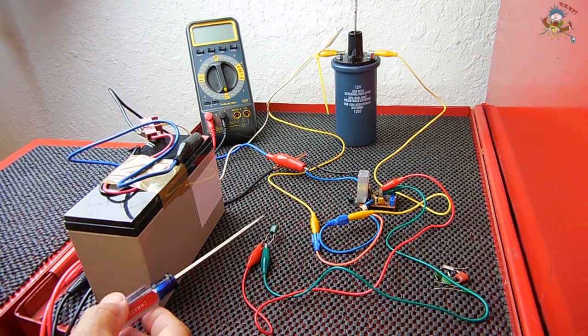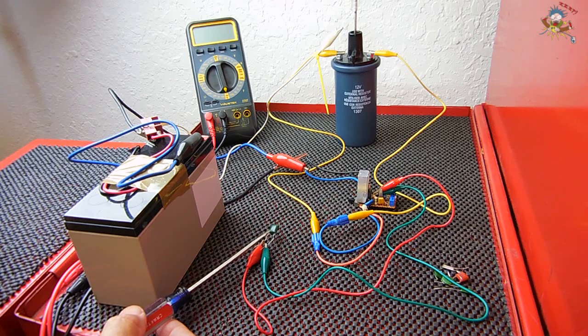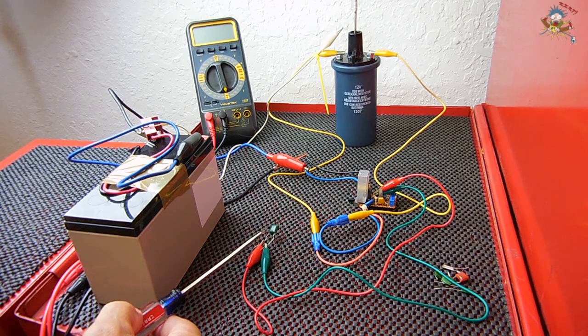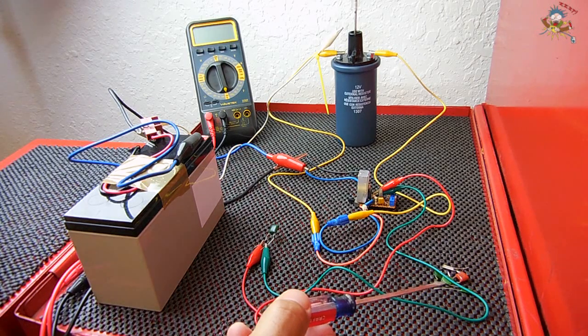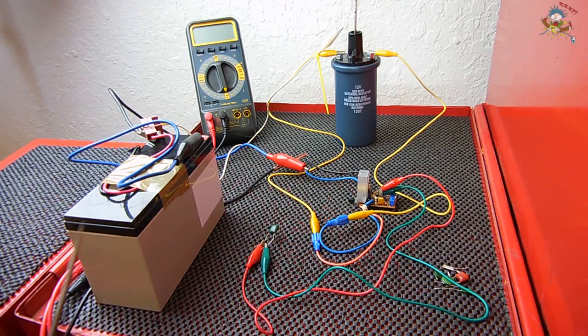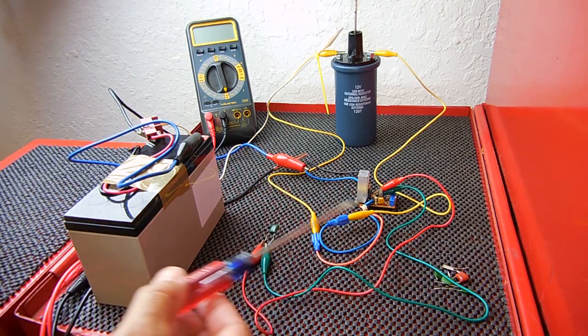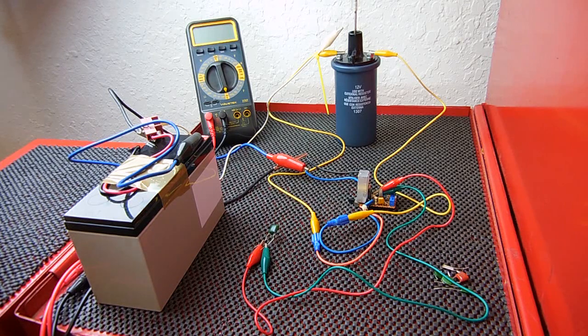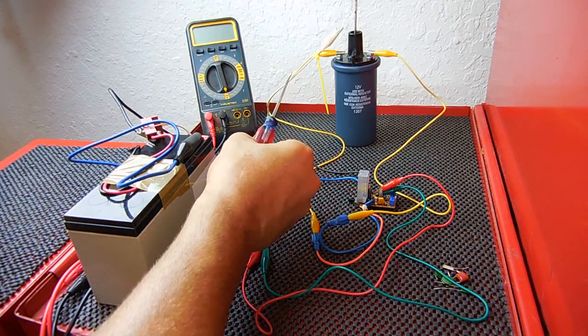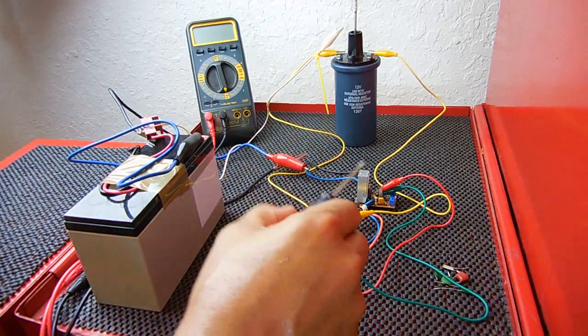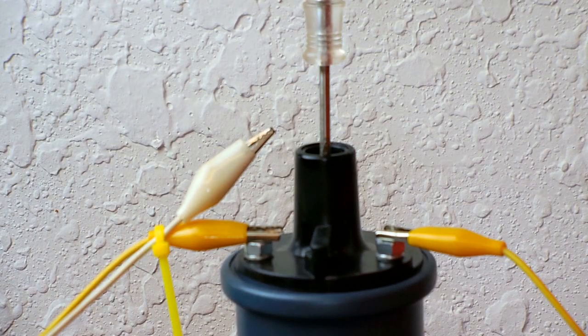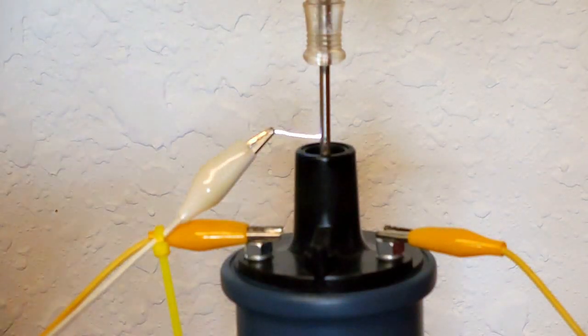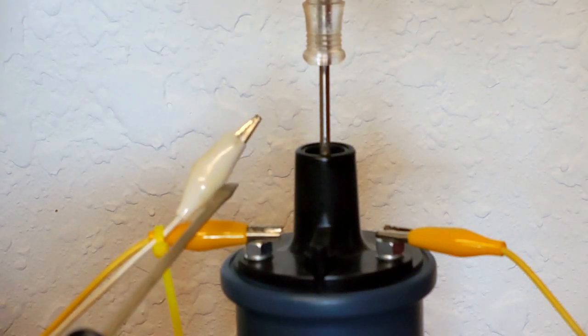The first capacitor we're using is a 0.1 microfarad, 100 nanofarad, or 104 cap. This will give the largest spark, very close to one inch, and it's also the lowest frequency of all the capacitors. The higher the value, the lower the frequency. The lower the capacitor value, the higher the frequency. I'm going to give you a closer look and turn the switch on. This wire is nothing more than a ground—it's connected to the negative terminal on the battery. This is the power supply coming from the board. Let me turn it on. Very close to an inch.